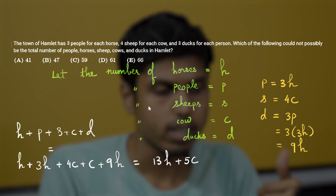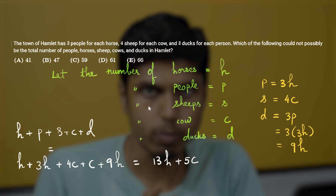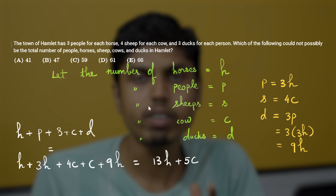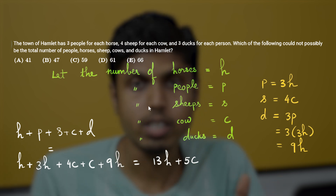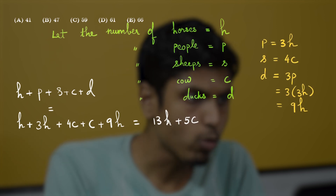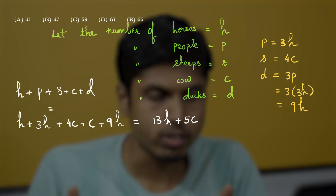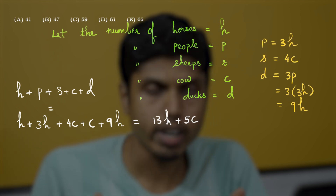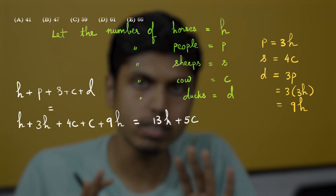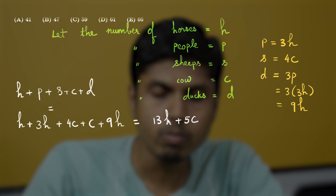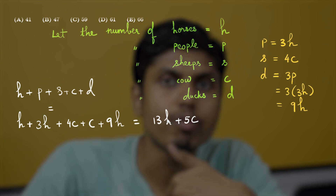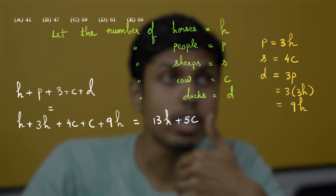Notice that we started with five variables and have reduced the problem to just two variables, h and c. There is no direct or indirect relation given between horses and cows, so they are independent. The question now becomes: which of the given options cannot be represented as 13h + 5c, where h and c are non-negative integers?